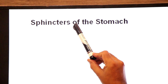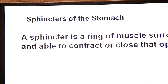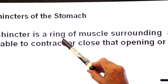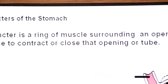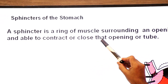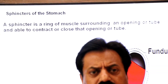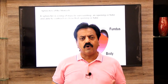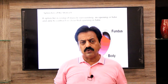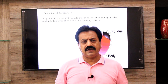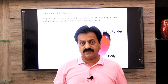Now we will discuss the sphincters of the stomach. First, the definition: a sphincter is a ring of muscle surrounding an opening or tube, able to contract or close that opening or tube. So we have two sphincters in the stomach: a cardiac sphincter and a pyloric sphincter.